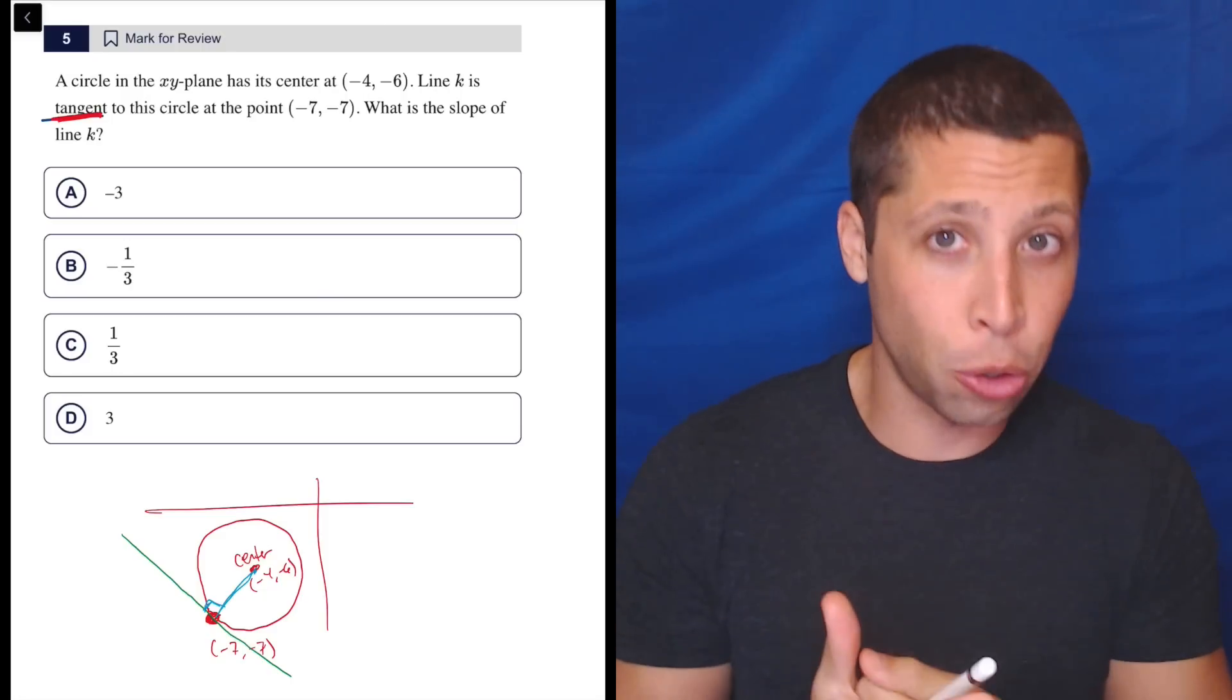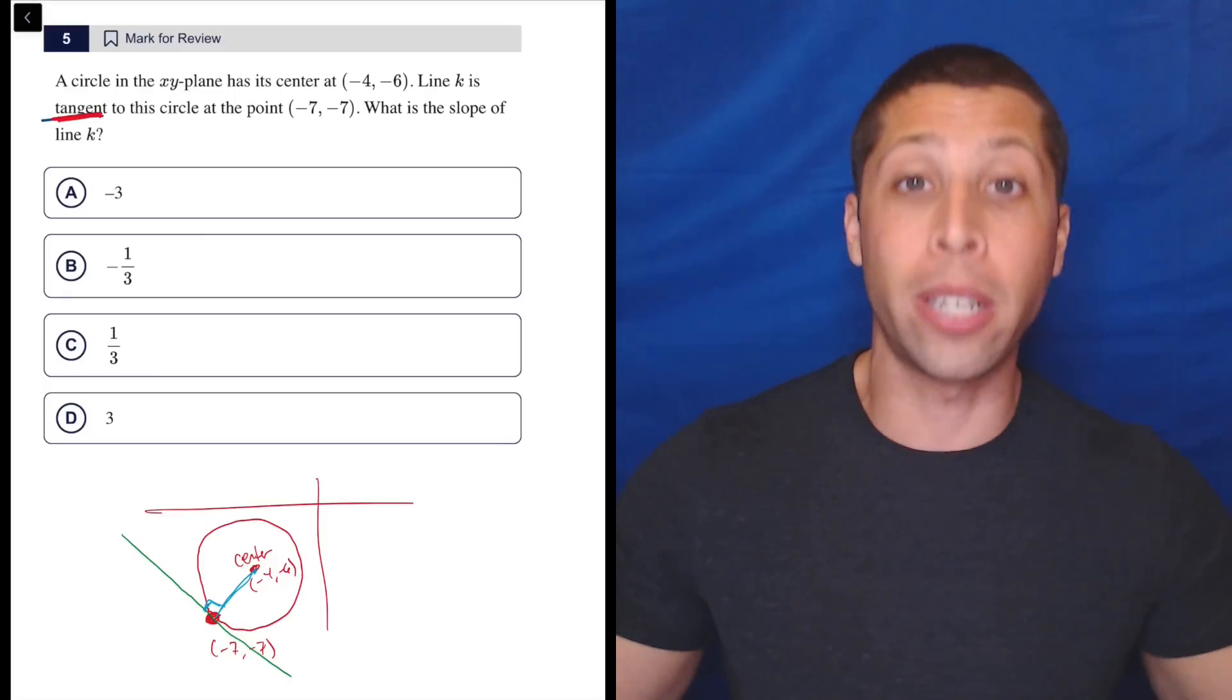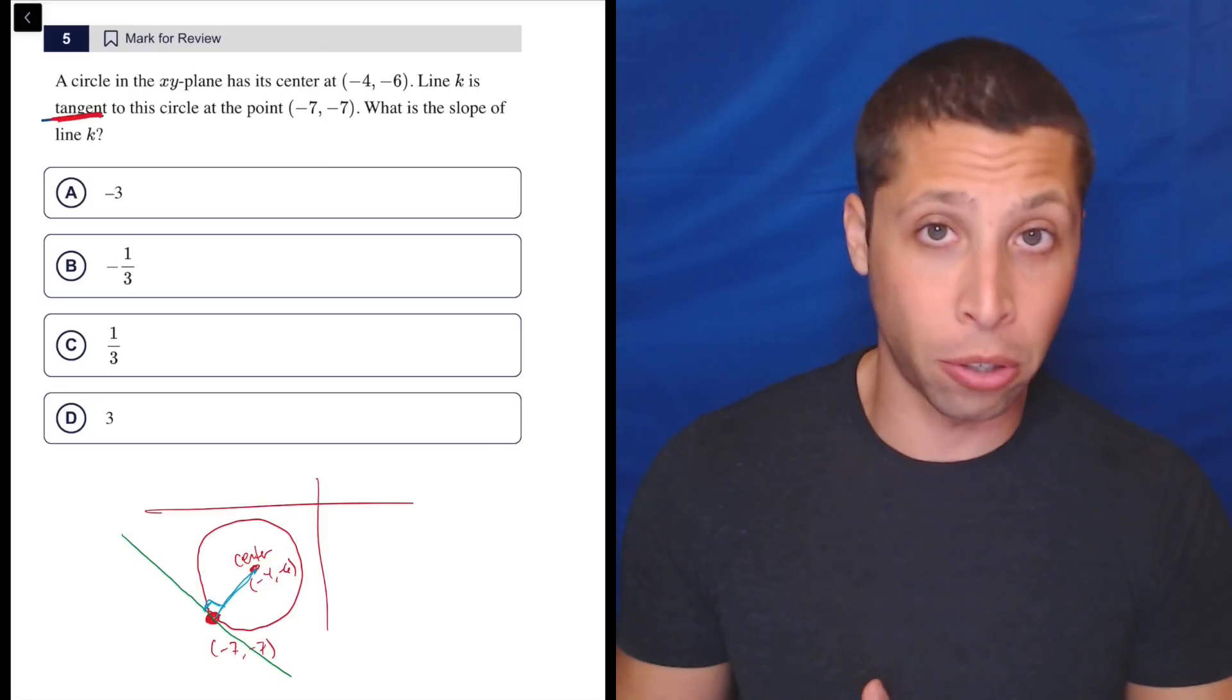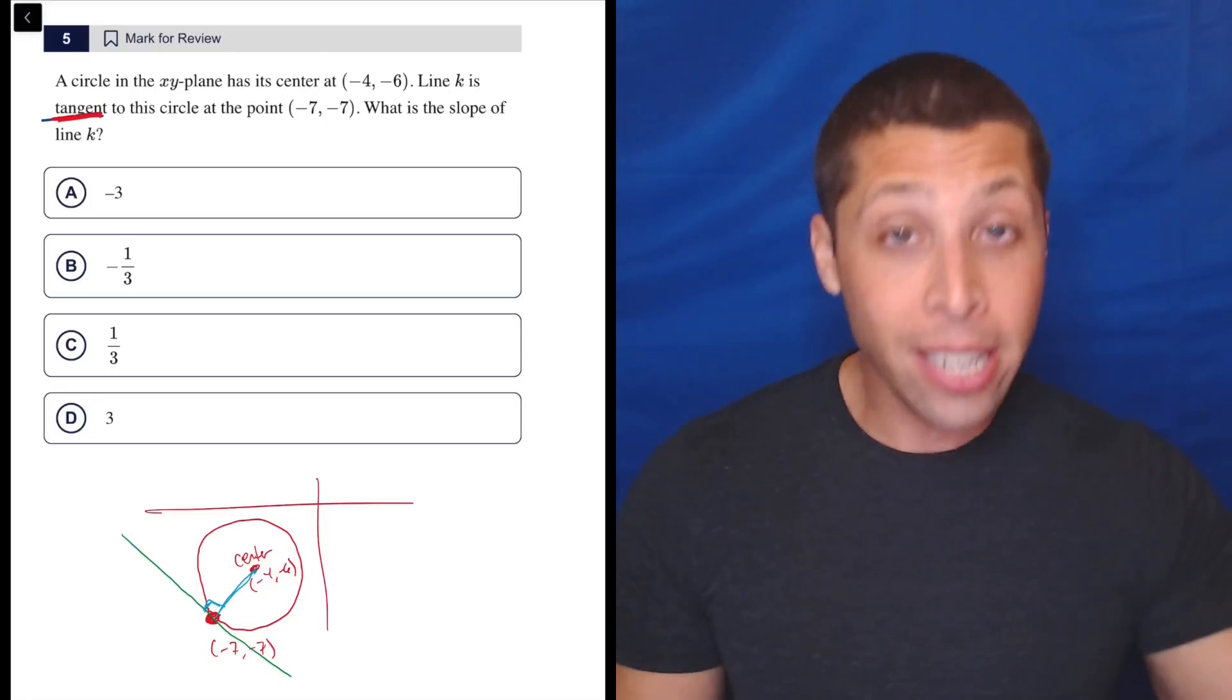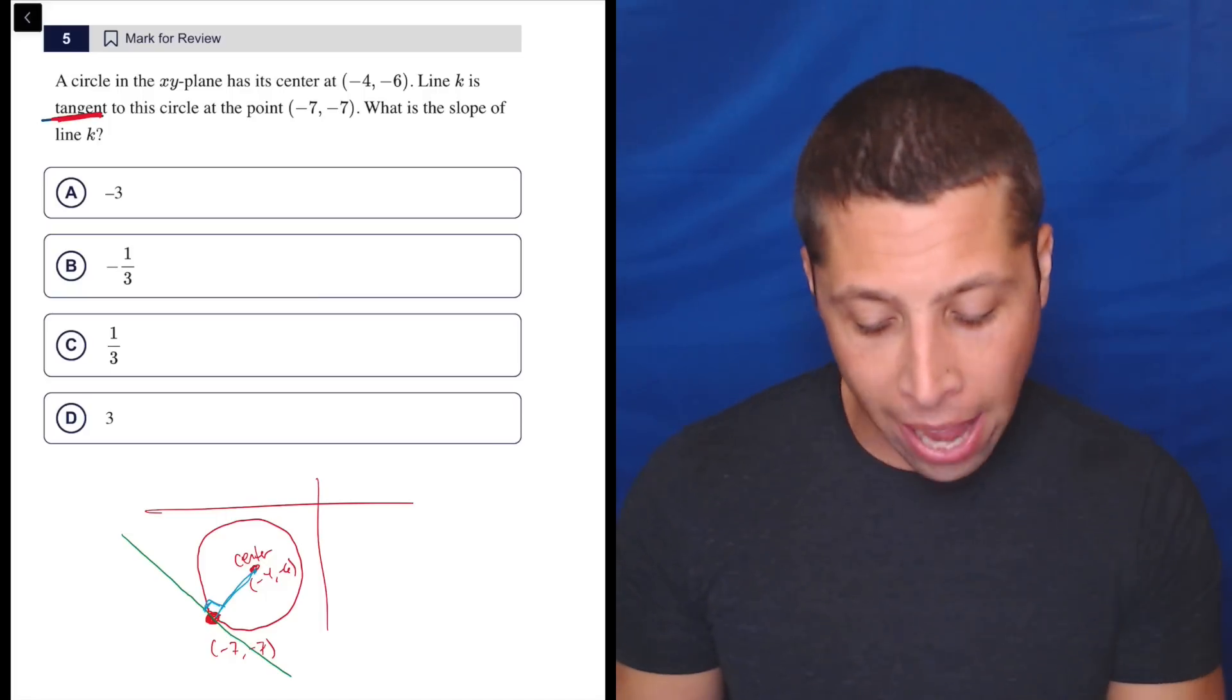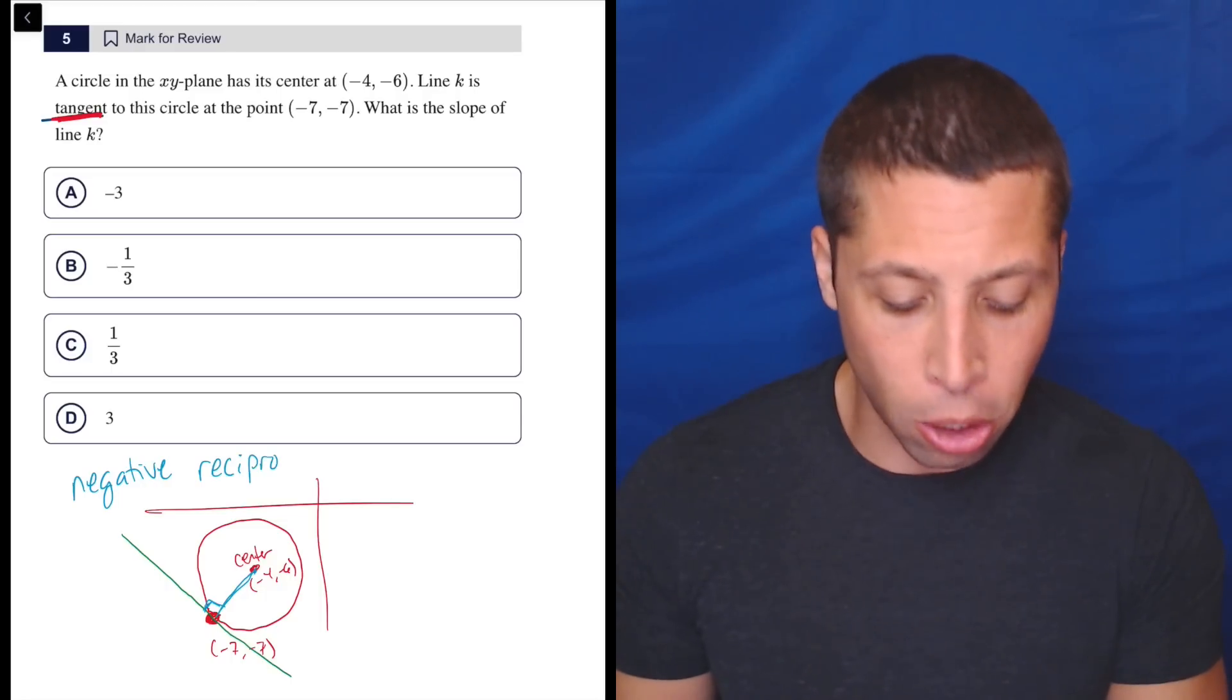If they say something is tangent to a circle, odds are good that you are forming a right angle that you are going to need at some point in the process. And here that's everything because I don't care about the circle. I care about the radius and the line itself, and perpendicular lines have to have negative reciprocal slopes.